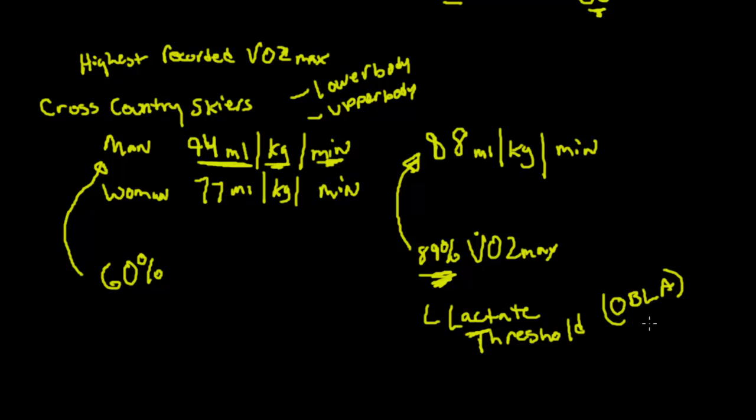The higher that lactate threshold is, the longer you can go in endurance events and the harder you can train. Somebody that can train at 60% is not going to do as well in aerobic events because their lactate threshold is probably much lower. The onset of blood lactate accumulation is occurring much sooner.